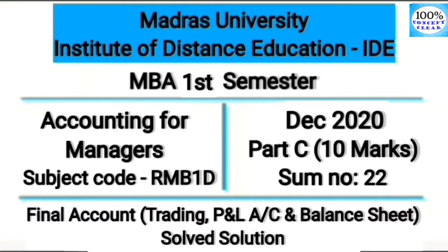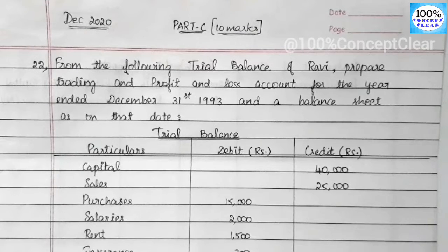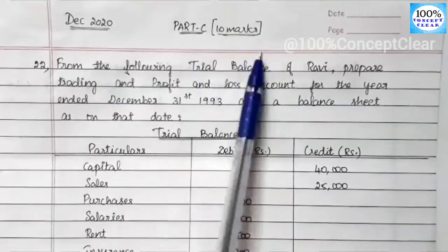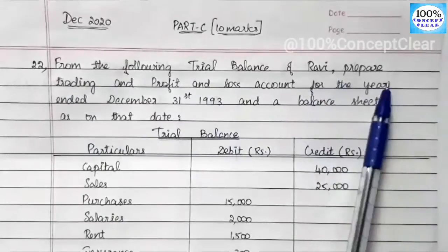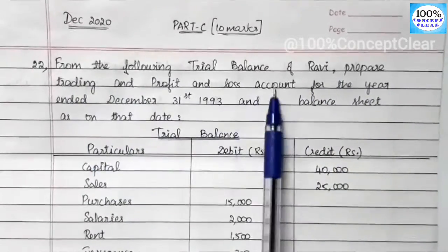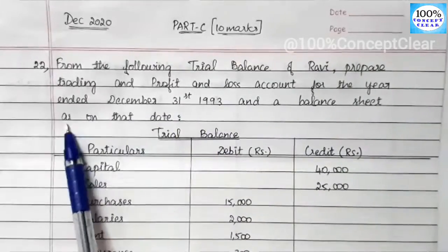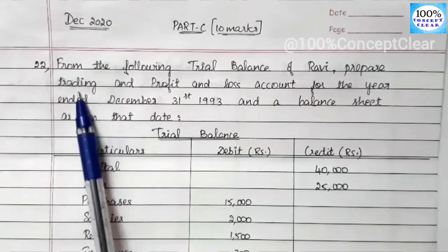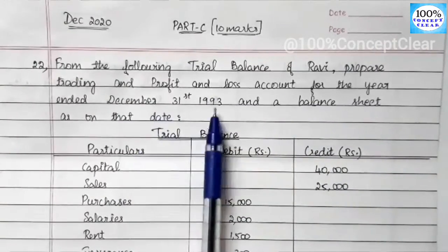In this video, we are going to get a previous year question paper from Madras University — the Accounting for Managers subject in December 2020. We will work on a 10-mark question from the trial balance of Ravi, preparing a Trading and Profit and Loss Account for the year ended December 31st, 1993, and a Balance Sheet as on that date.